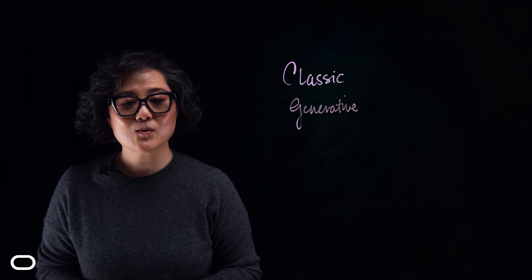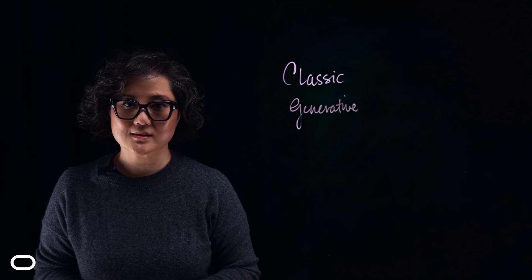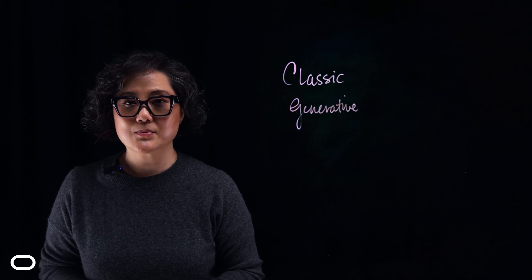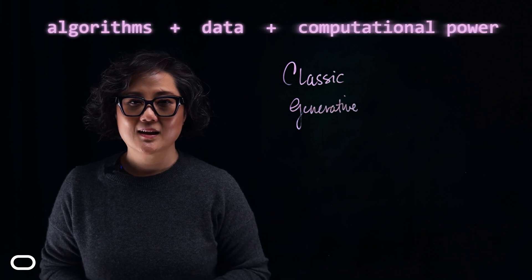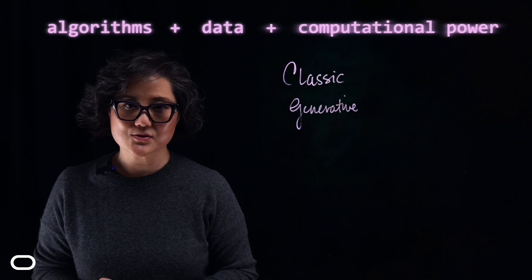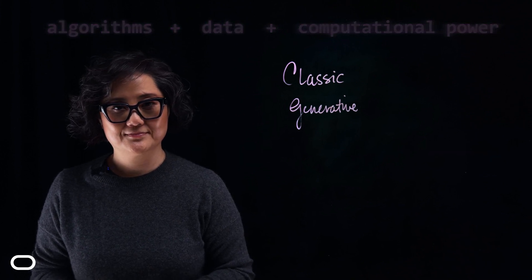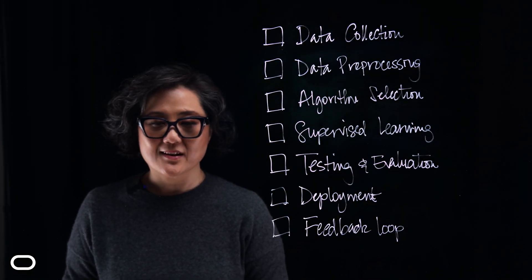Now that we know about the two types of AI, let's break down how AI works. At its core, artificial intelligence works through a combination of algorithms, data, and computational power. Think of an algorithm as a set of instructions that AI follows to perform a task. Here's a simplified breakdown of how it works.